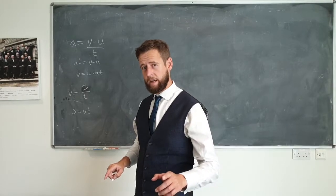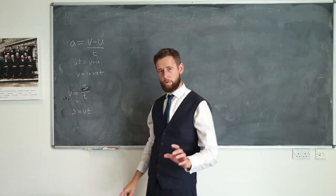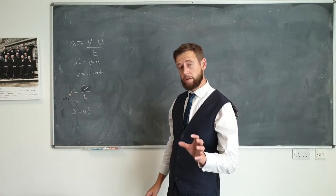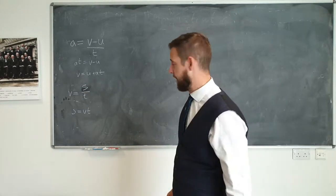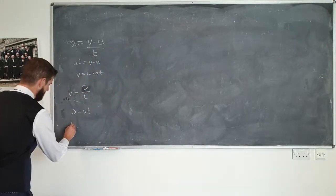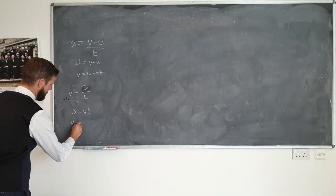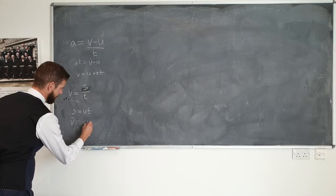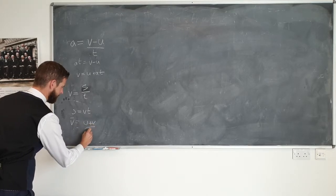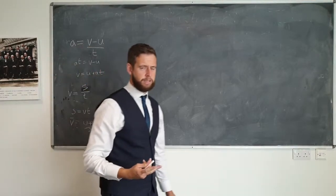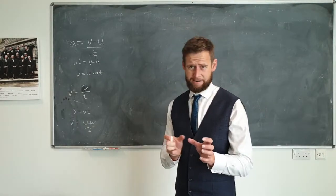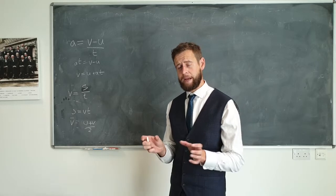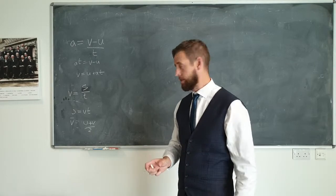So we cannot have V as a single quantity in this equation. But we could replace V with the average velocity. The average velocity is equal to U plus V over 2. The average of any two things is equal to the two things added together and divided by 2.